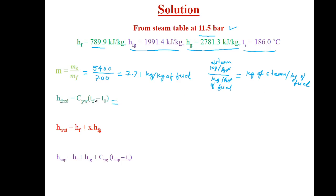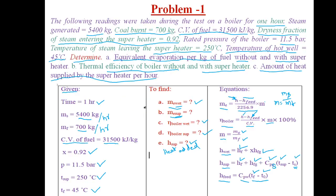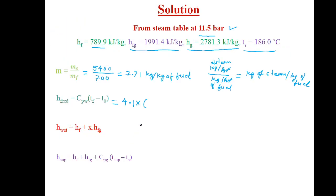Coming to the enthalpy of feed water: specific heat of water cpw = 4.1 kJ/kg·K, into temperature of feed water which is given as 45°C, minus t0 = 0. This works out to be 184.5 kJ/kg. This is the enthalpy of feed water.